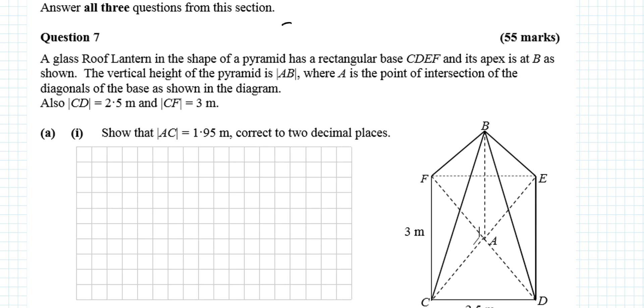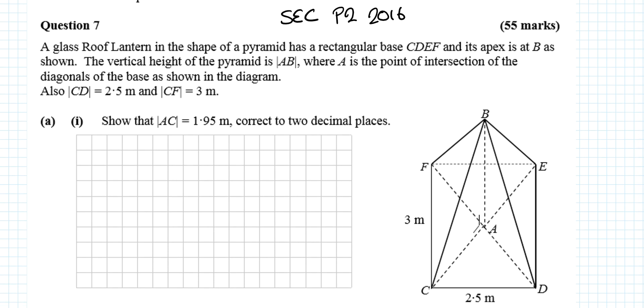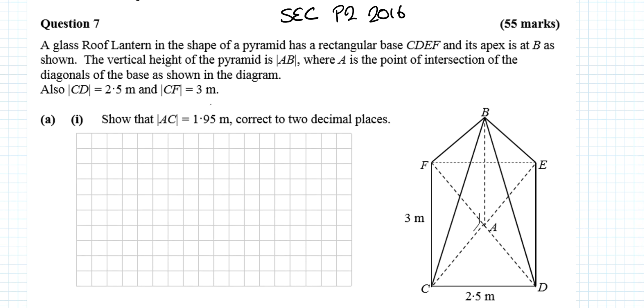Okay, so in this question we're looking at the SEC Leaving Cert Higher Level Maths Paper 2, Question 7, 2016. A glass roof lantern in the shape of a pyramid has a rectangular base CDEF, and its apex is at B as shown. The vertical height of the pyramid is AB, where A is the point of intersection of the diagonals of the base. CD is 2.5 metres and CF is 3 metres.